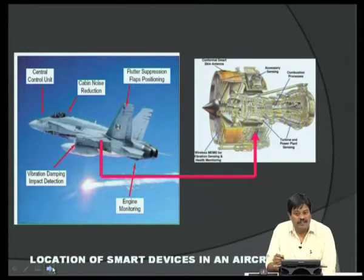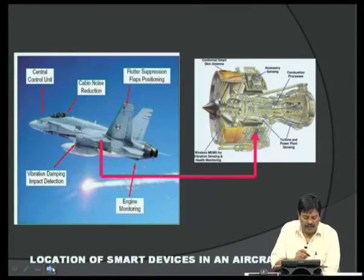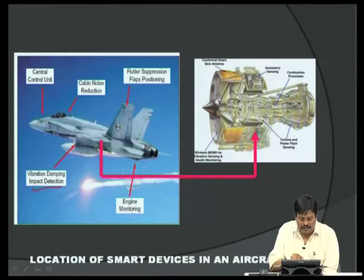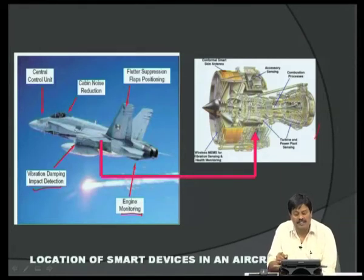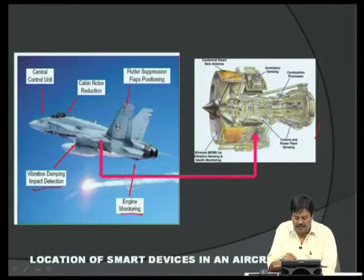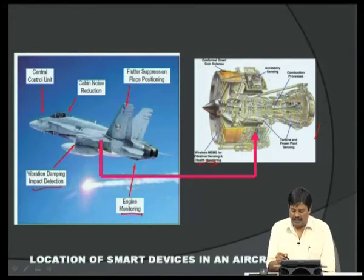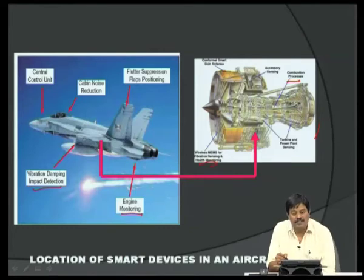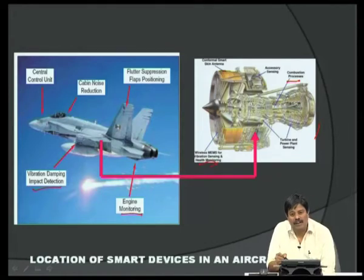Smart devices in an aircraft are located at multiple positions. Vibration damping devices are placed in the engines. An engine monitoring unit is also present. The engine itself is a complex system with compressor blades, turbine blades, bearing housing systems, and other accessories. Wireless MEMS sensing is positioned especially in the compressor blades. Conformal antennas and combustion process monitoring systems are also included. The number of sensors required is enormous.